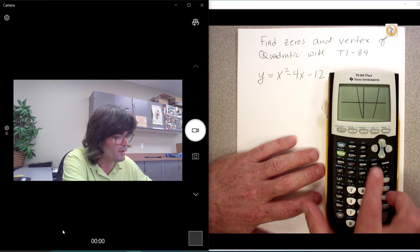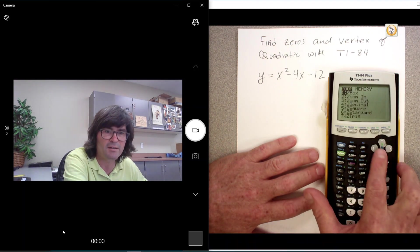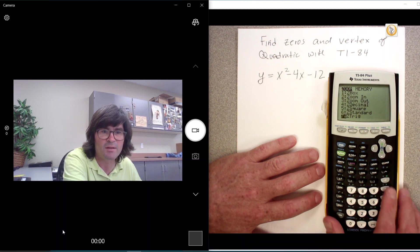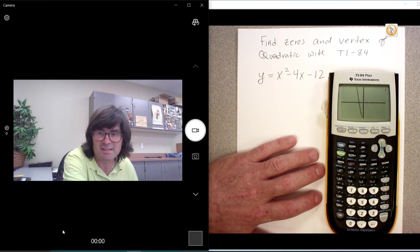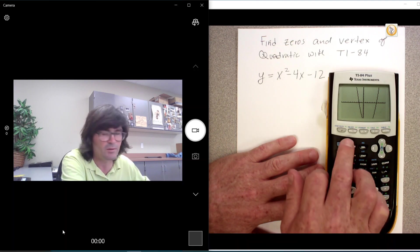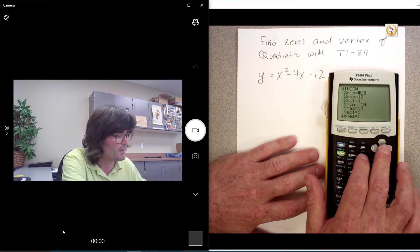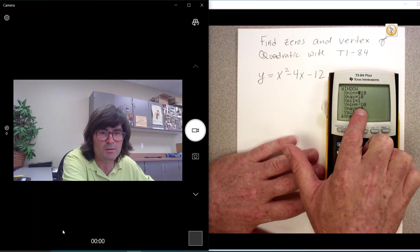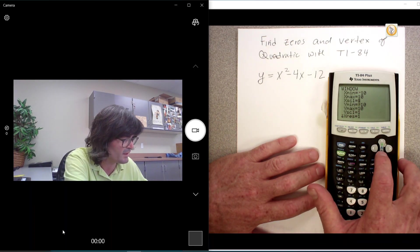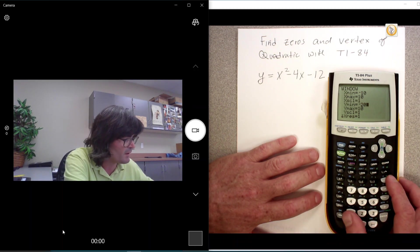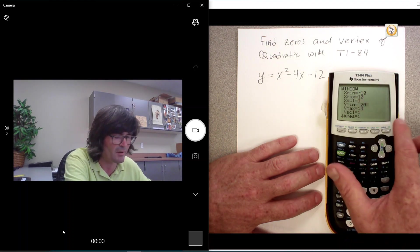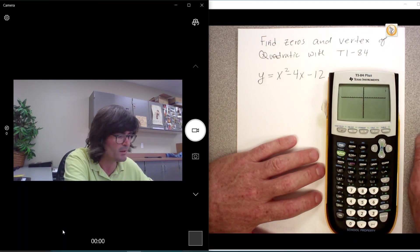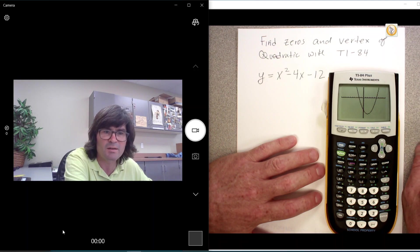This is the standard window. If your calculator is not in the standard window, you go to zoom standard and you get 10 by 10 in every direction. So to change this, I'm going to go to window right here. We want y to go below minus 10, so maybe we go down to like minus 20 and then still up to 10. The x can stay the same, minus 10 to 10. I hit graph and there's my graph.